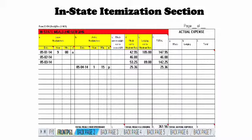If you click on back page two, this is the itemization section of the travel voucher. In this section you will list your meals and lodging. Under section A, Leave Headquarters, enter the first date you travel — 050114, numbers only. Once you tab over to the hour, enter the hour and minute, and it will automatically insert the dashes. This person left at 9:00 AM, so they entered 9 for the hour, 00 for the minutes, and A for AM.